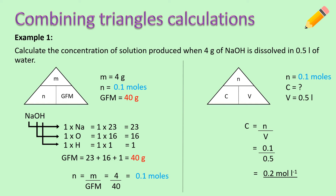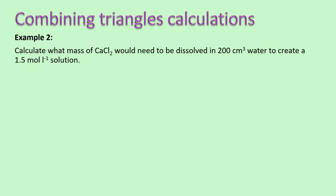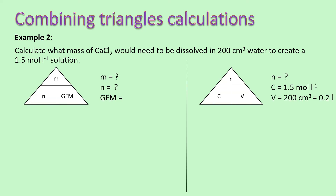Pause there and copy this example down into your notes. Now let's look at example number two. Calculate what mass of CaCl2 would need to be dissolved in 200 centimetres cubed of water to create a 1.5 moles per litre solution. Split your page in half and write down what you know. From the question we have the concentration, which is 1.5 moles per litre, and the volume given is 200 centimetres cubed. Remember to convert that to litres — divide by 1000 — so our volume is 0.2 litres.